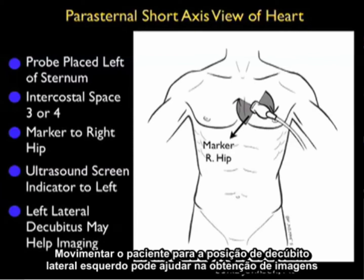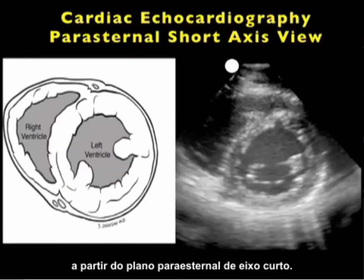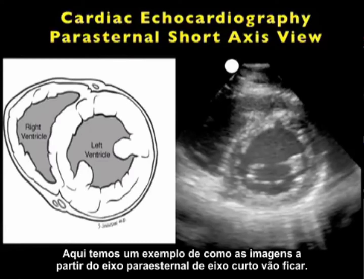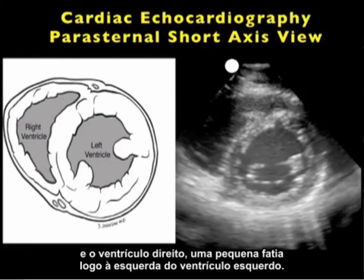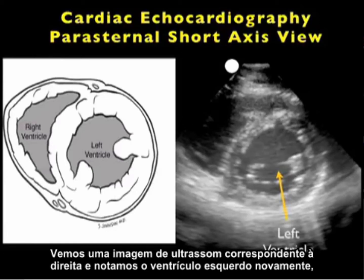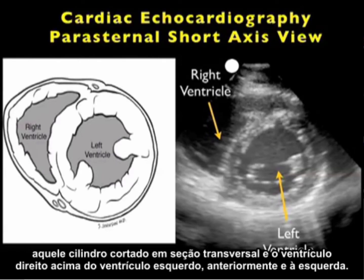Moving the patient into left lateral decubitus position may help imaging from the parasternal short axis plane. Here's what the views will look like: we see a pictorial showing the left ventricle cut in cross-section as a cylinder, and the right ventricle is a little sliver just to the left of the left ventricle. In the corresponding ultrasound image, note the left ventricle as that cylinder cut in cross-section, and the right ventricle above and more anteriorly to the left.